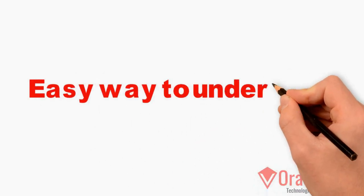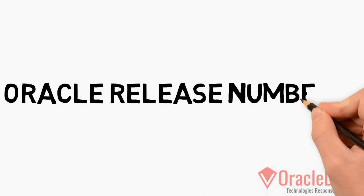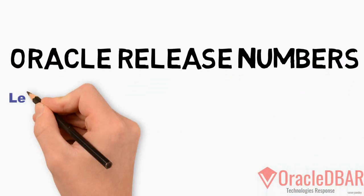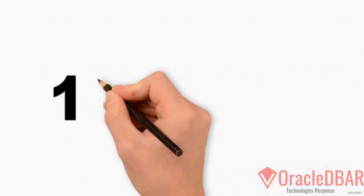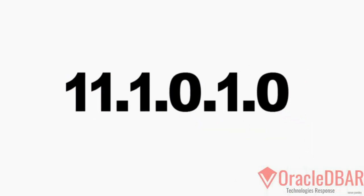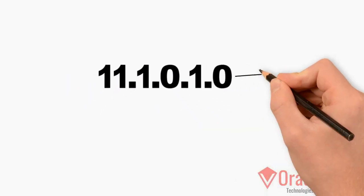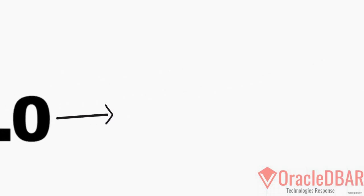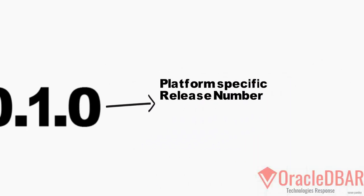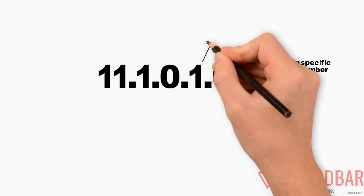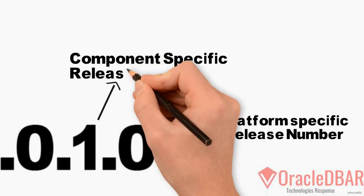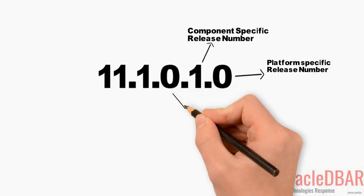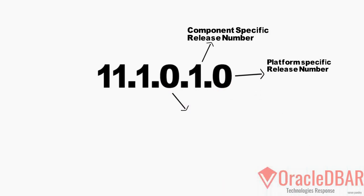An easy way to understand an Oracle release number. Let's take the example 11.1.0.1.0. The last digit stands for the platform-specific release number, the second-last stands for the component-specific release number, and the third from the end stands for the application server release number.